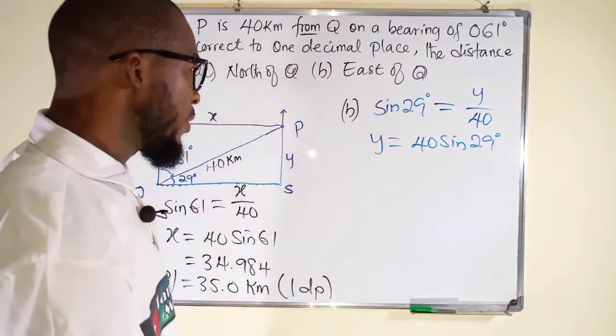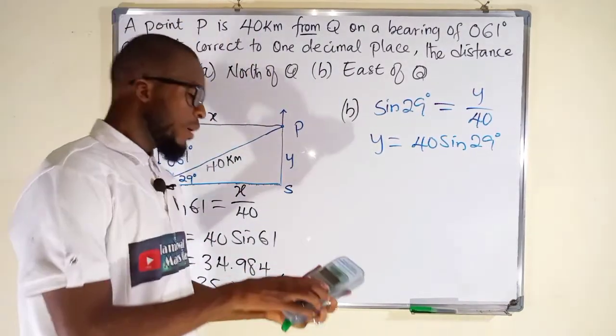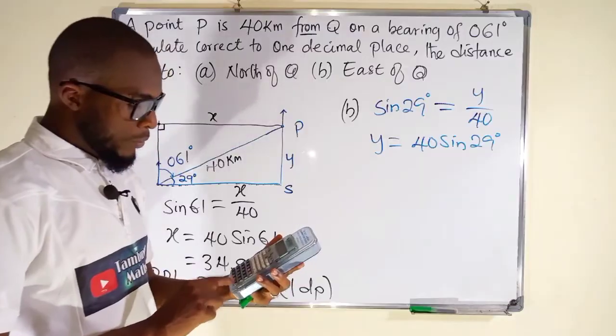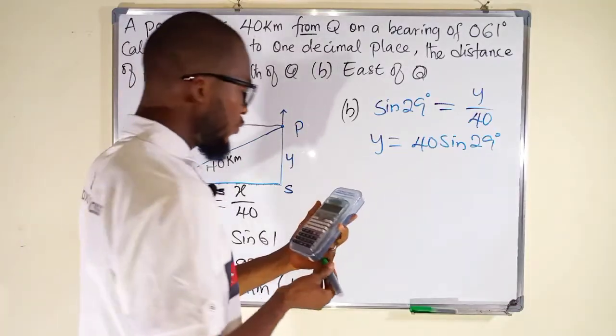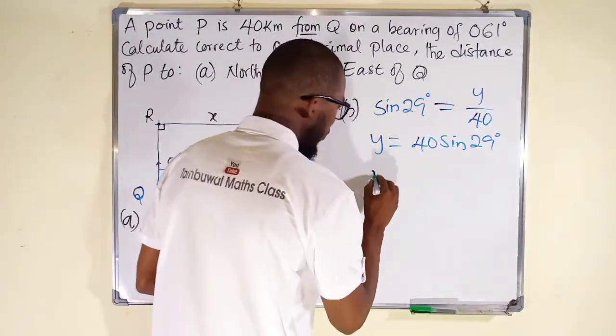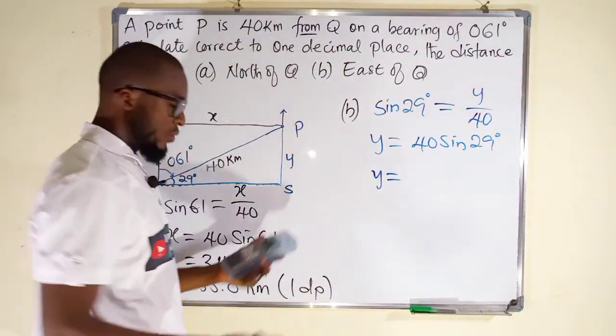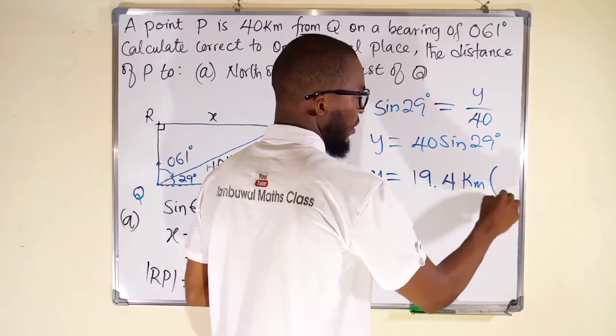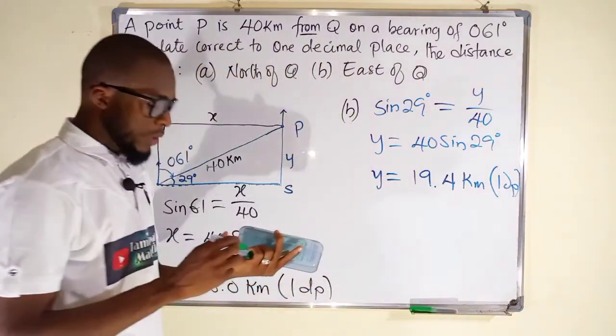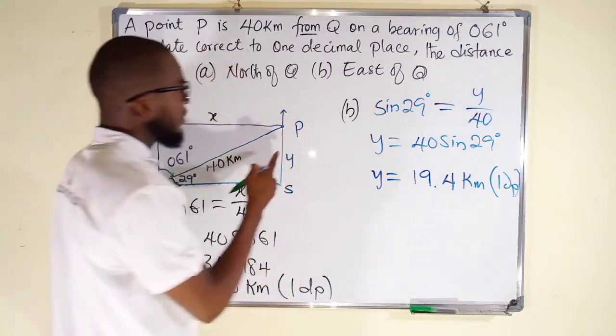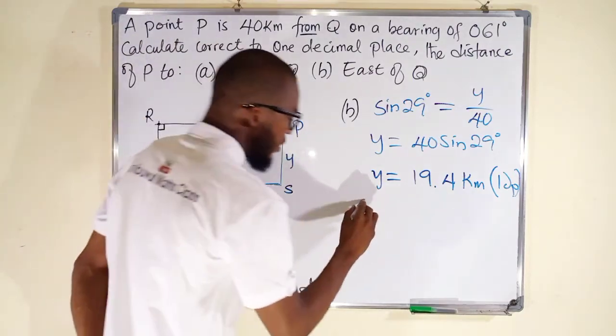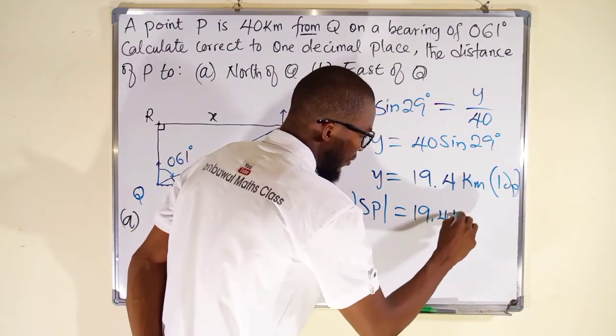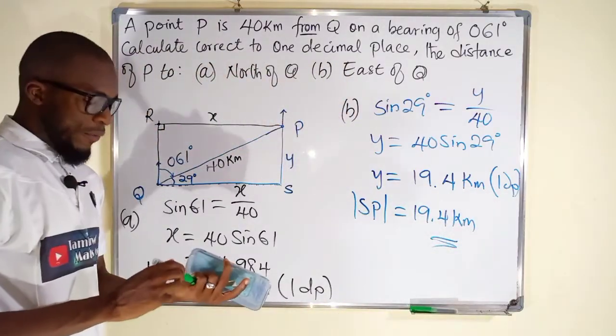Use your calculator. Press 40, multiply by sine 29. What we have is 19.39238. But we want to round it to one decimal place. So we can write it as 19.4 kilometers. This is 1 dp. But remember, this y is just the distance between P to S. PS is the same thing. This is equal to 19.4 kilometers. So we have just answered these questions.